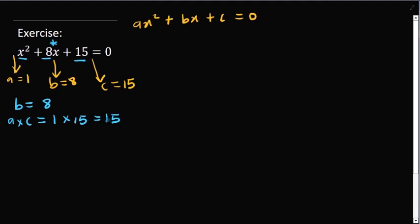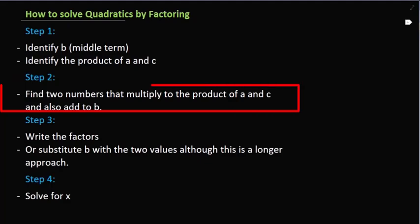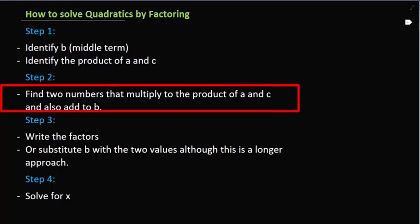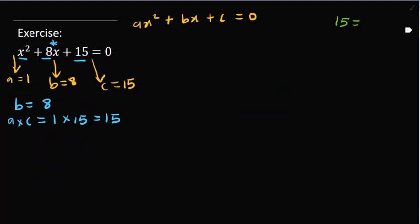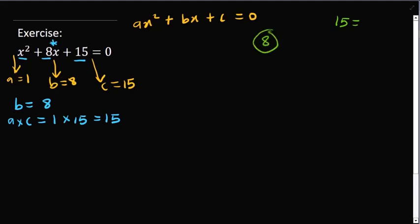Once you have done this, you are on the right path to solve this question. Rule 2 says: find two numbers that multiply to the product of a and c and also add to b. We want to find two values that can multiply to 15 and add up to 8.